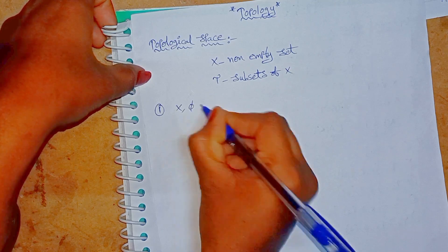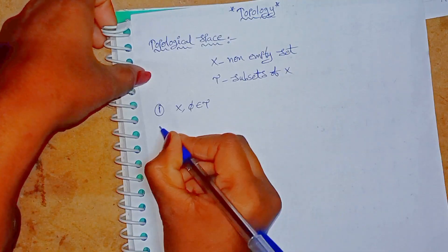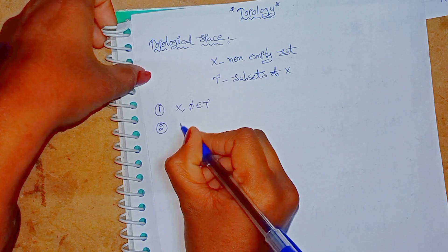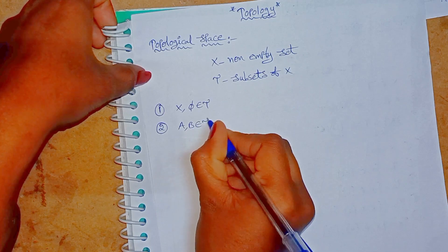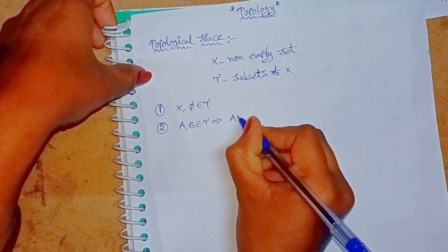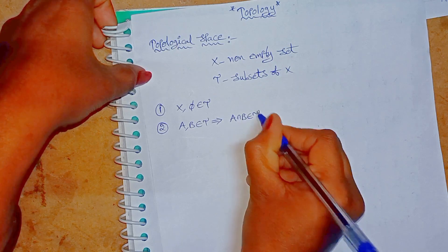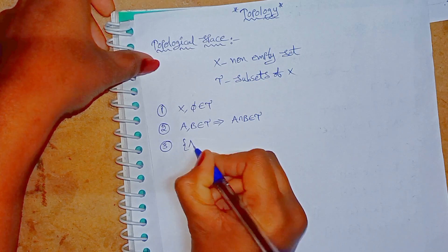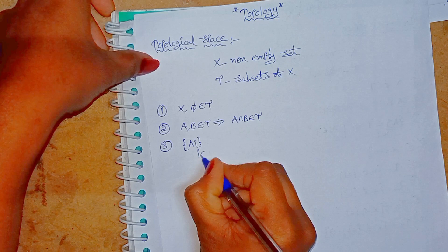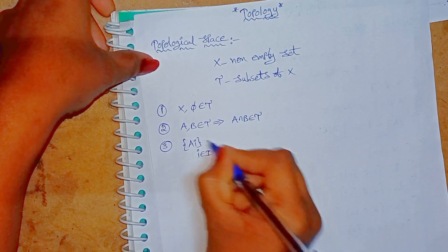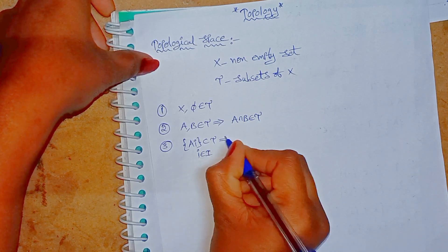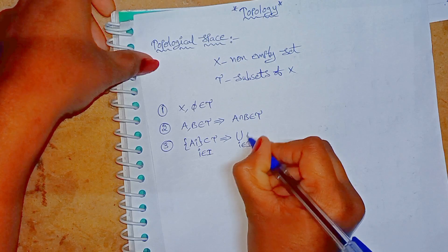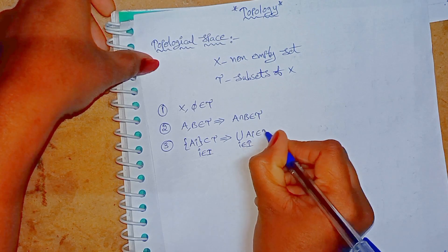First condition: X and the empty set (∅) belong to tau. Second condition: if A and B belong to tau, then A intersection B belongs to tau. Third condition: if A_i for i belonging to index set I are subsets in tau, then the arbitrary union of A_i belongs to tau.